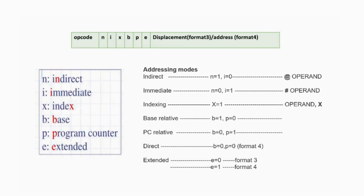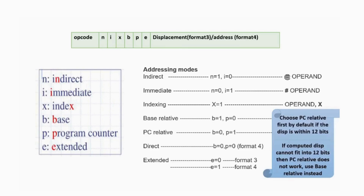When deciding whether to use base-relative or PC-relative addressing: always try PC-relative first by default. If the computed displacement fits within 12 bits, use PC-relative. If the displacement cannot fit into 12 bits, then PC-relative does not work and you must use base-relative addressing.